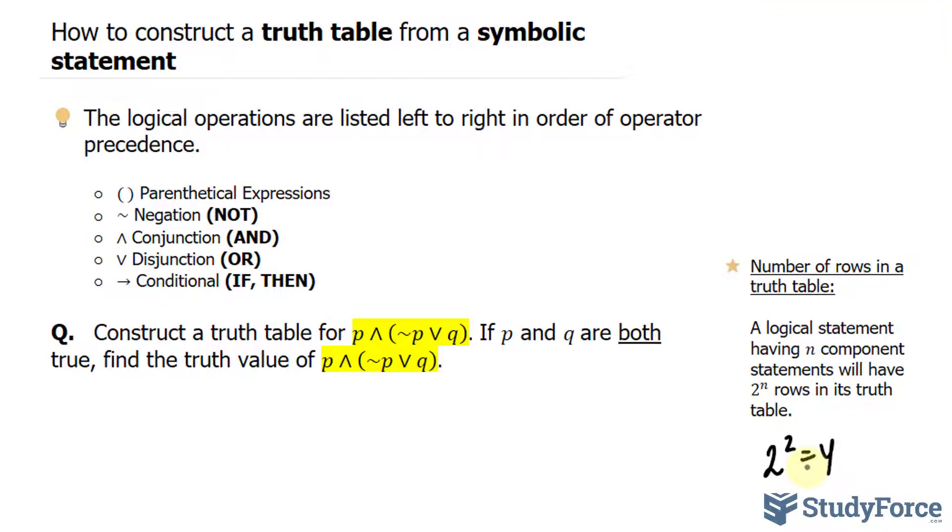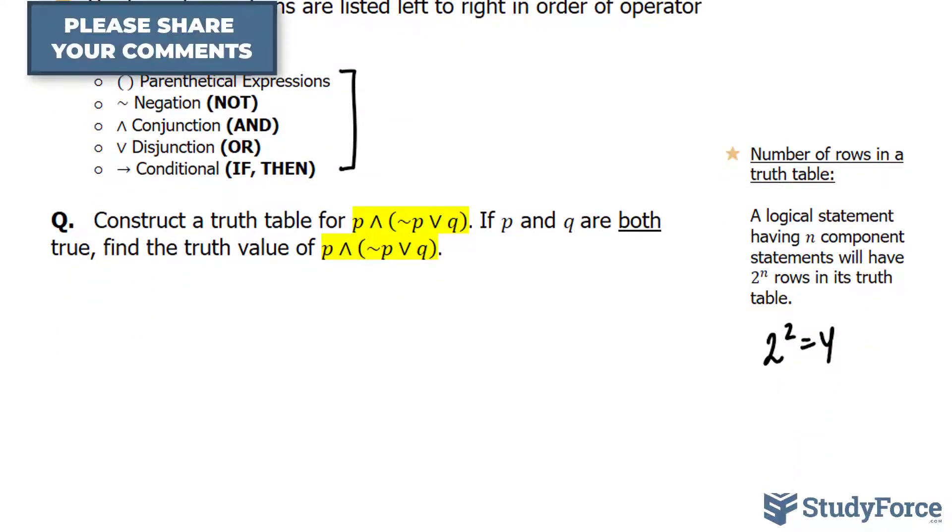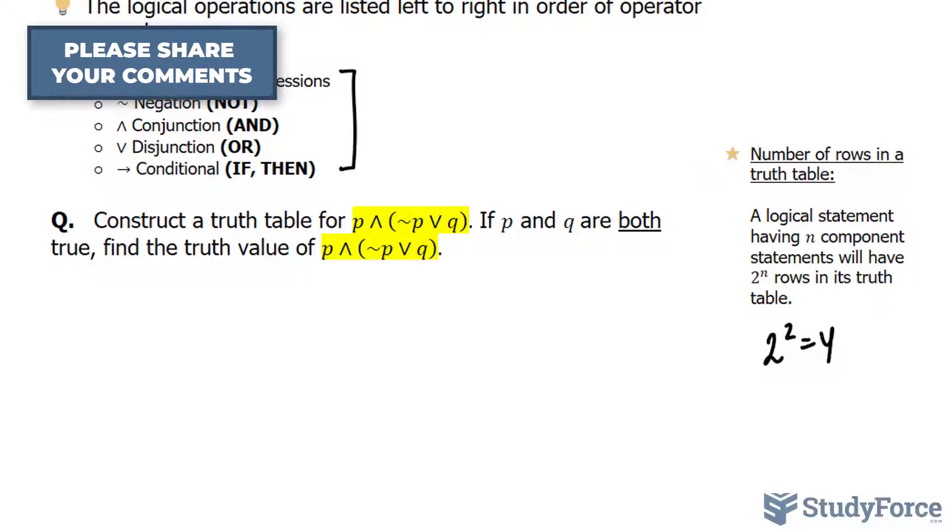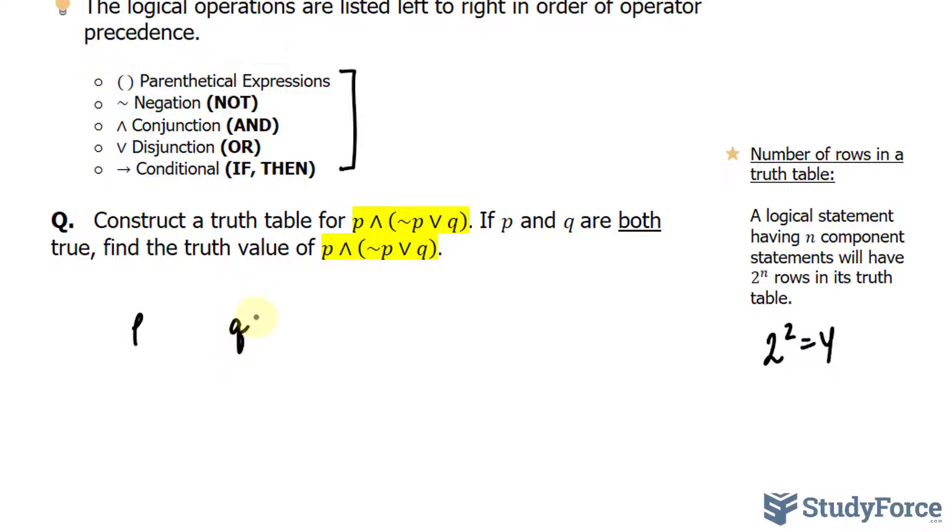Now, in case you've never done this before, these are the logical operators that are normally used in statements, ordered by their precedence. With that being said, I'm going to write down p and q, giving them their own columns.